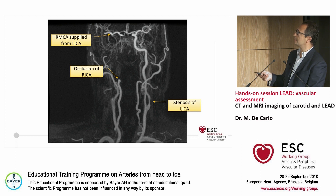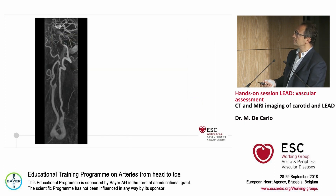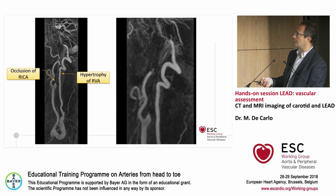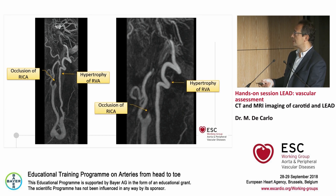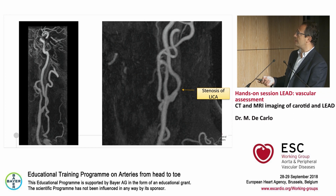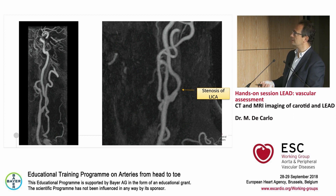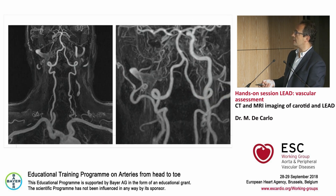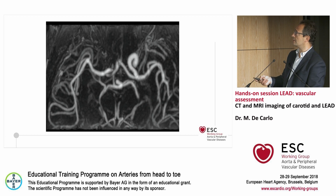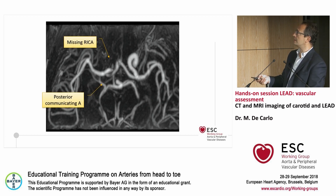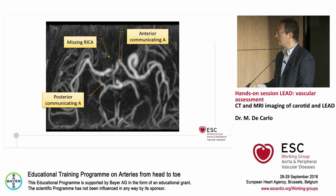On the intracranial MRA, you can see that the right middle cerebral artery is supplied from the left internal carotid artery. You can magnify the images and see the stump of the right internal carotid artery and the hypertrophic vertebral artery that compensates for the occlusion. The stenosis of the left internal carotid artery is clearly visible. You can see the posterior circulation with the basilar artery and posterior communicating arteries — the polygon of Willis — demonstrating that this patient has good collateral compensation.